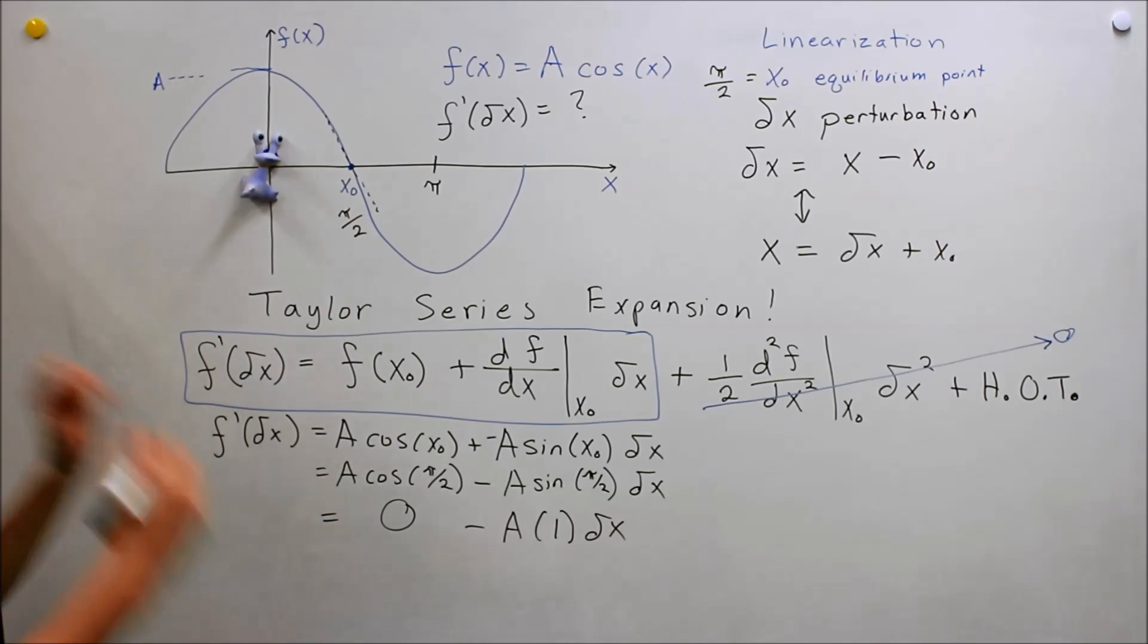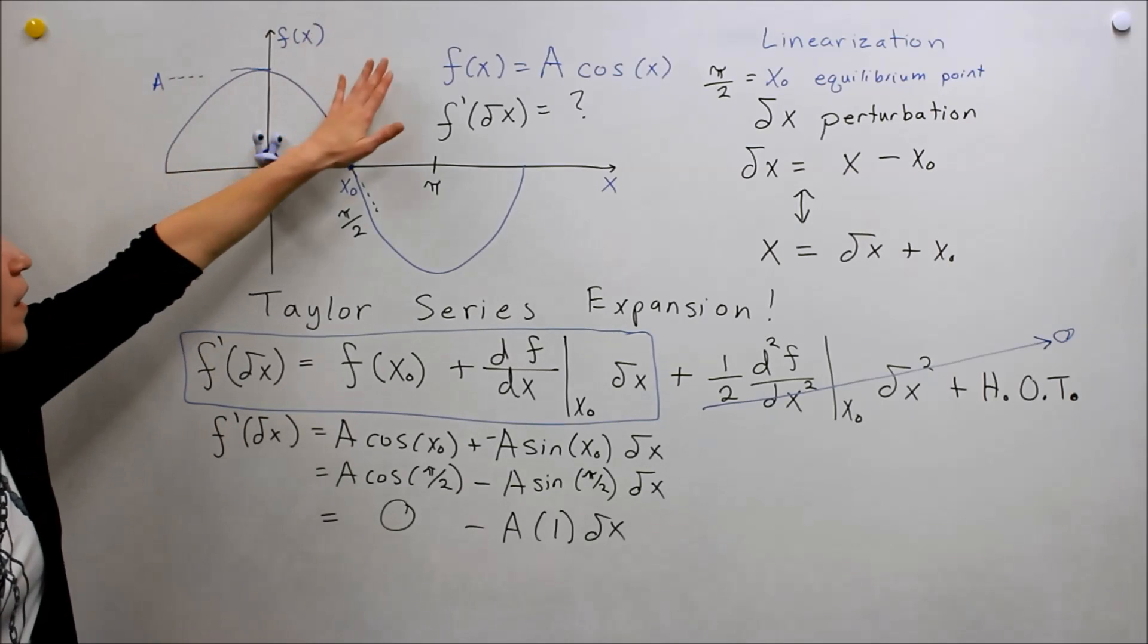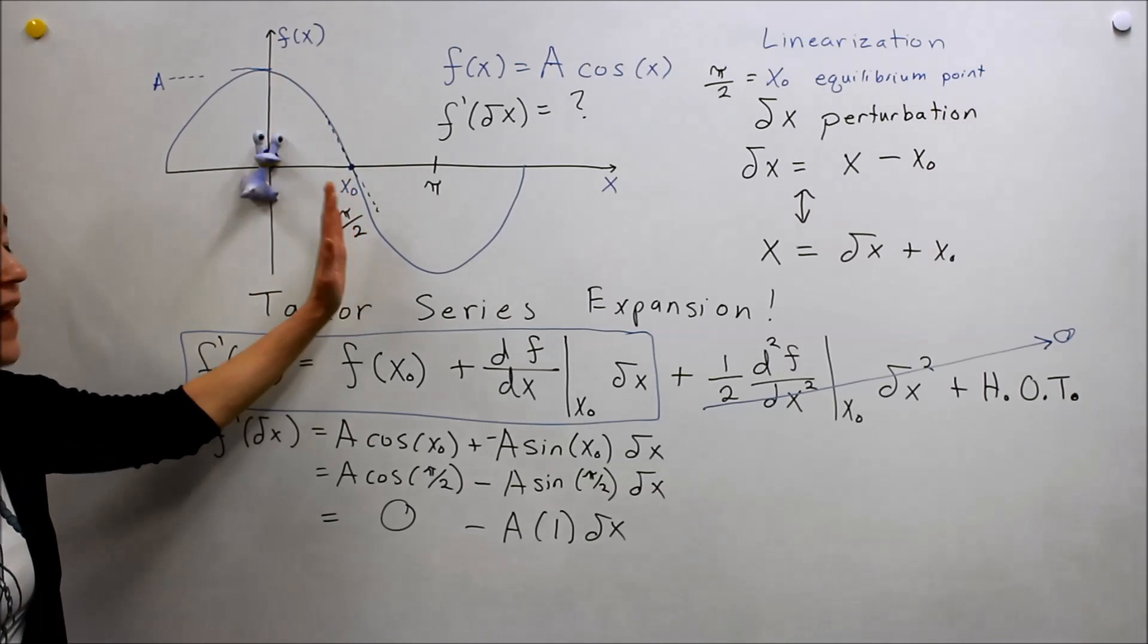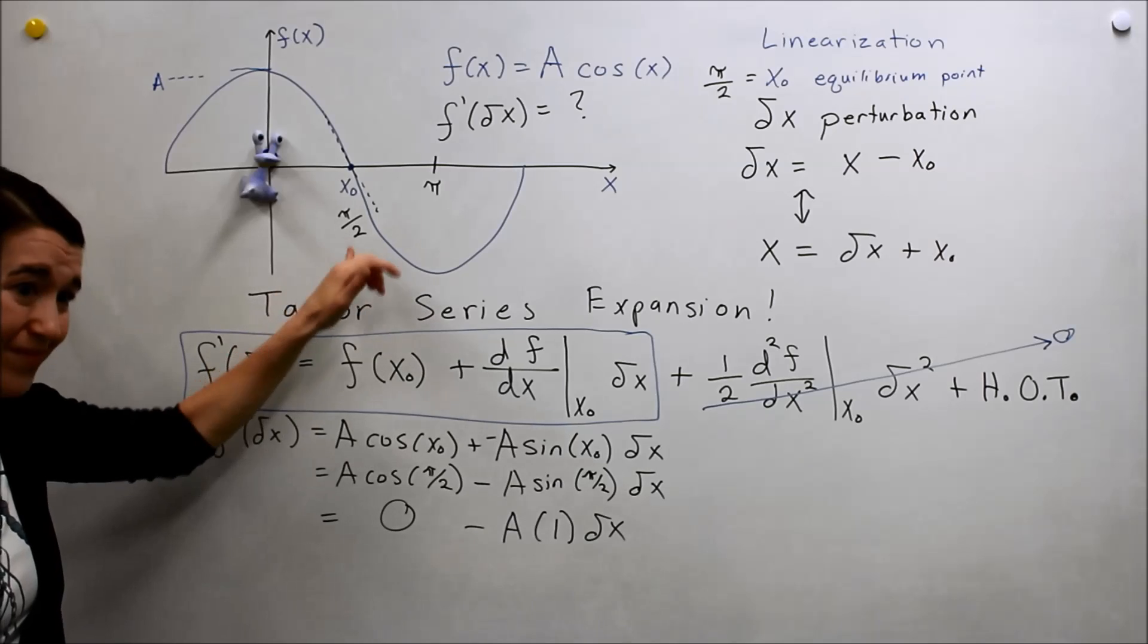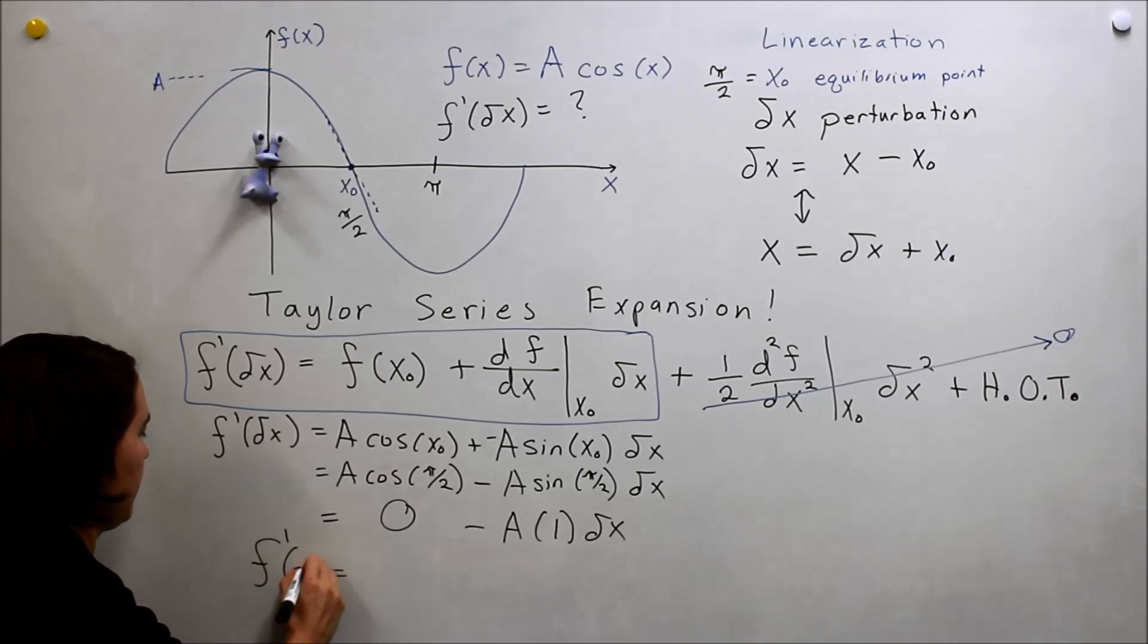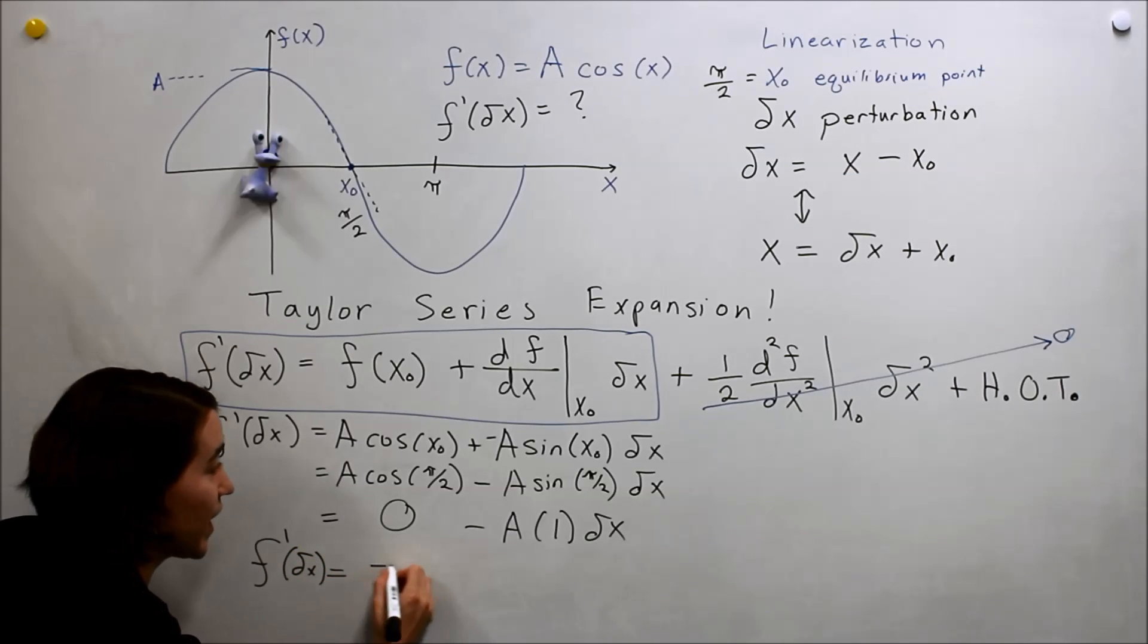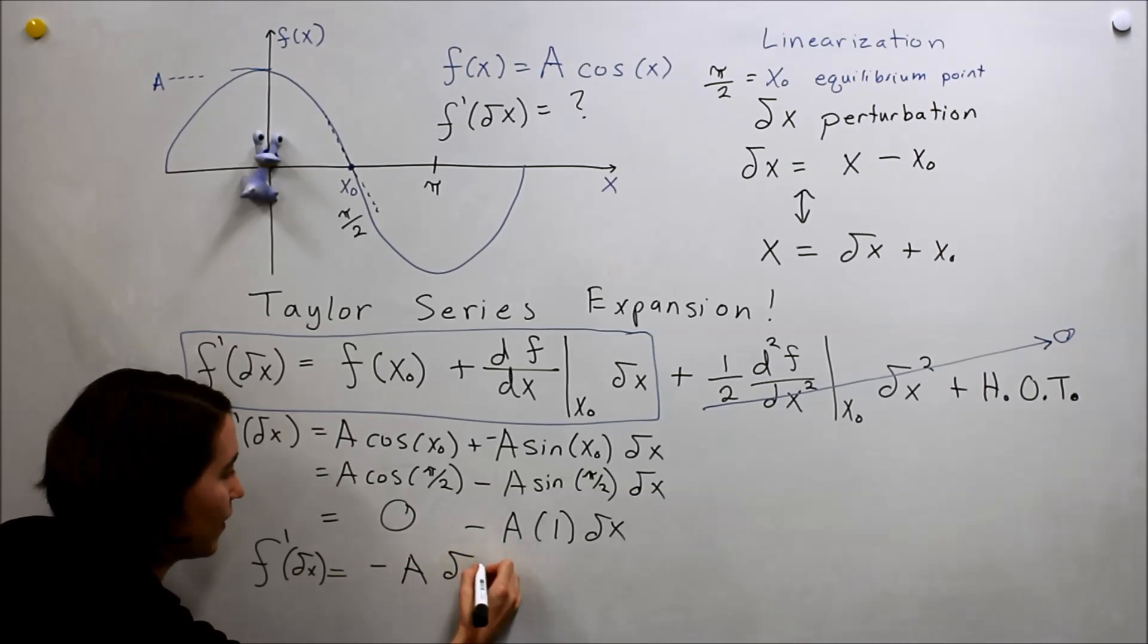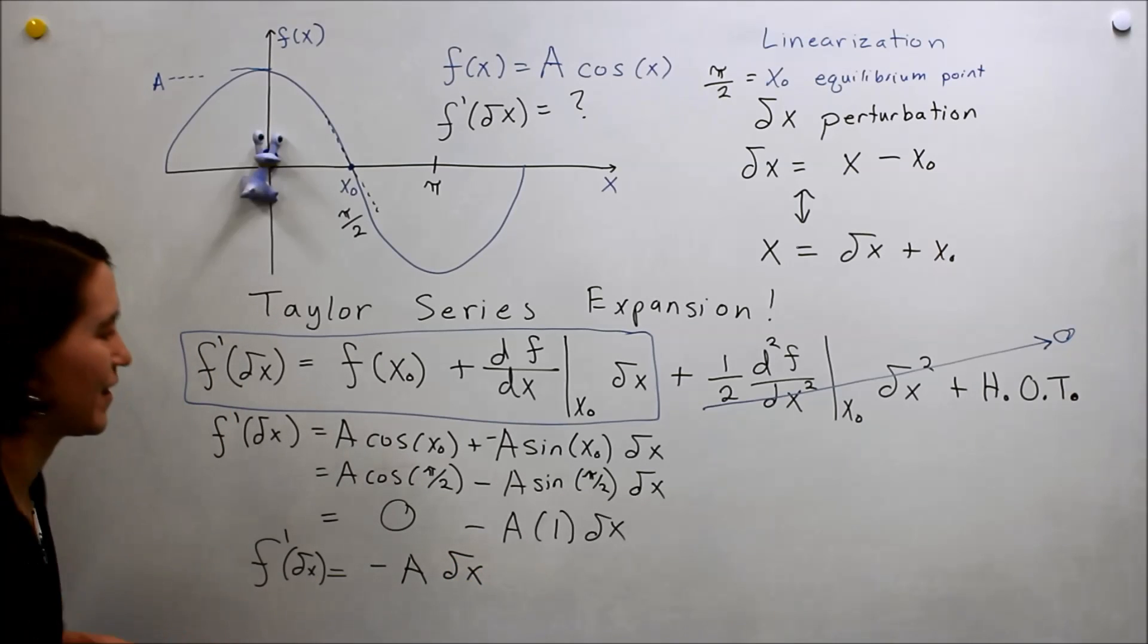So our final linear expression for this function, evaluated at x naught, which is π over 2, is δx equal to negative A δx. So this simplifies very nicely.